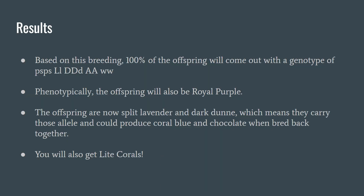In this specific case, all of the offspring have the same genotype and they will all be phenotypically royal purple. These royal purples are now split, meaning they are carriers of the dark dun and the lavender genetics. This means if we bred these royal purple offspring back to each other, we would now get royal purples, coral blues, chocolates, and even light coral. This kind of strategy is very helpful for developing colors that you might not be able to buy.